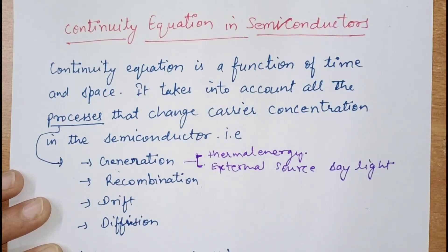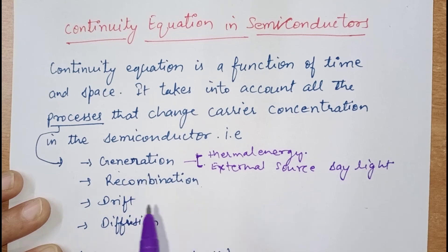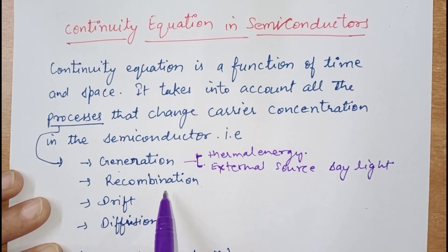What is the continuity equation? The continuity equation is a function of space and time. It takes into account all the processes that affect the carrier concentration in a semiconductor, and these processes are generation and recombination.